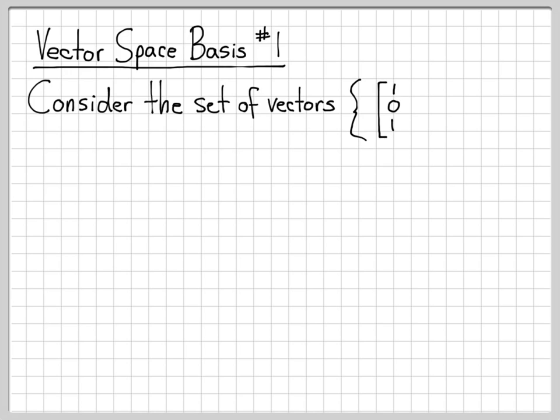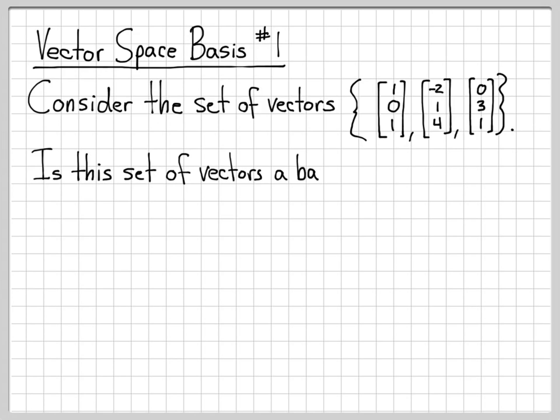So the set of vectors we're going to work with is the vectors [1, 0, 1], [-2, 1, 4], and [0, 3, 1], so we have three vectors of length 3. And we are asked, is this set of vectors a basis for R³? So R³ is the collection of all vectors of length 3.